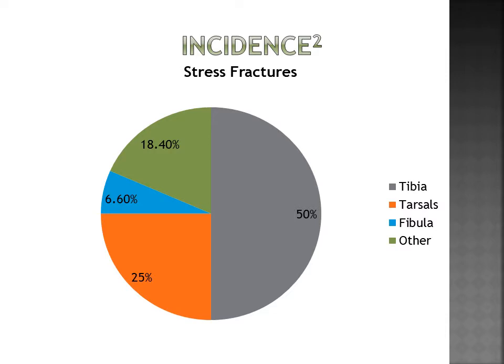As you can see on this chart, the tibia accounts for about 50% of stress fractures, and the distal tibia is most implicated, while the middle third of the tibia has the longest prognosis of healing. The tarsus accounts for about 25%, fibula for about 6.6%, and other bones account for about 18.4%.